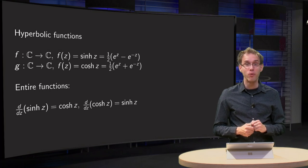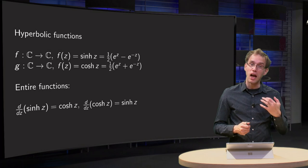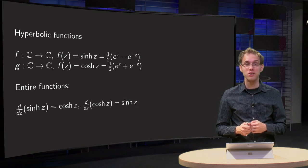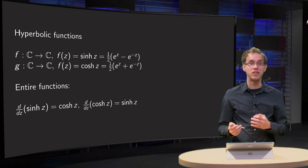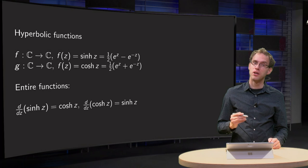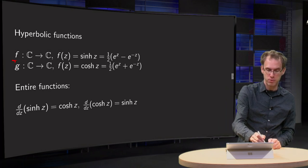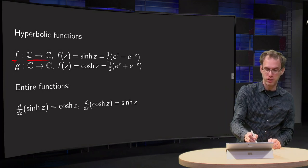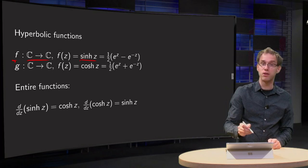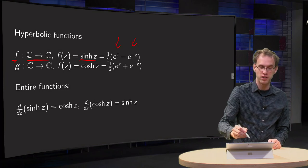In this video we will introduce the complex hyperbolic functions and we will see that the link to the real sine and cosine is really straightforward. So how are they defined? f from ℂ to ℂ, f of z equals sine hyperbolic of z, which is in the real case e to the power of z minus e to the power of minus z, divided by two.